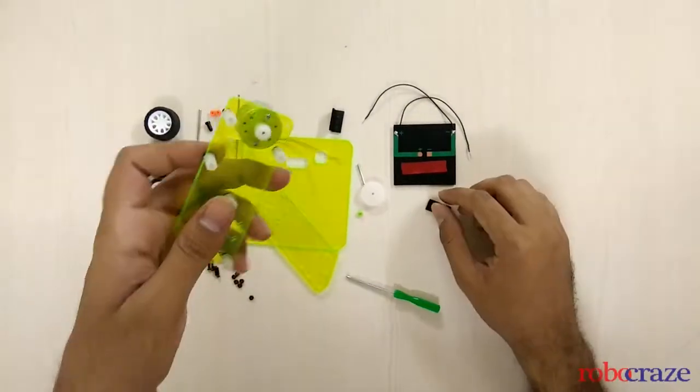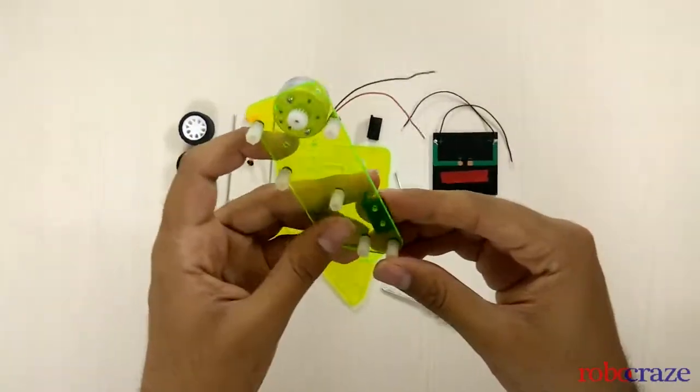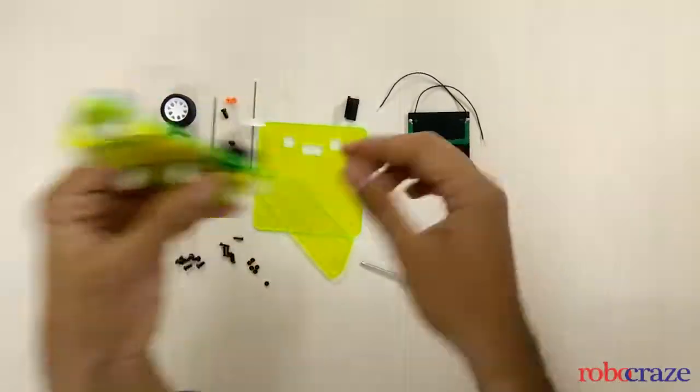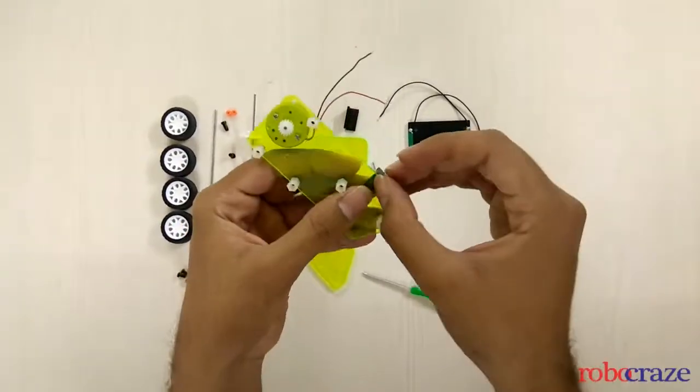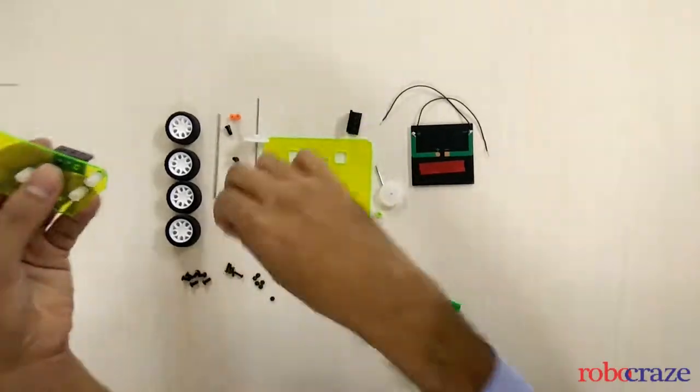Now it's time for connecting the L clamps. Now the L clamps are eventually used to connect the upper board of the chassis to the lower part.